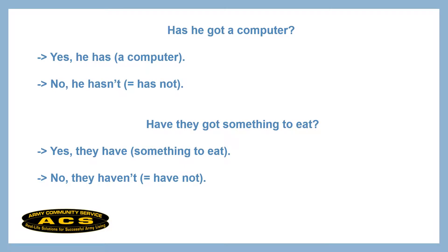It is possible to ask a question with 'has' or 'have.' We use 'has' for the third person singular — he, she, it. For example, we could ask: Has he got a computer?